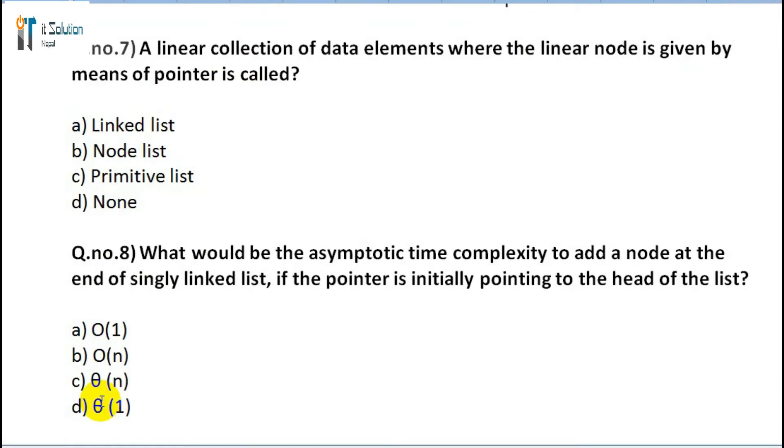Question 8: What would be the asymptotic time complexity to add a node at the end of a singly linked list if the pointer is initially pointing to the head of the list? A) Omega(1), B) Omega(n), C) Theta(n), D) Theta(1).